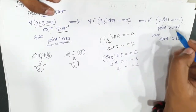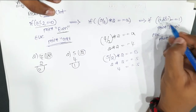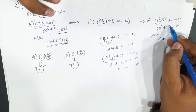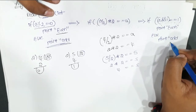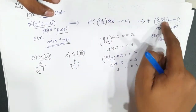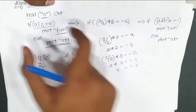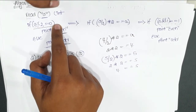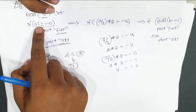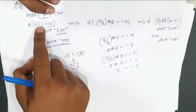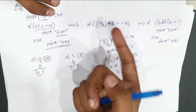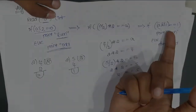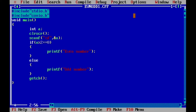Using bitwise operators, we can also determine whether a given number is even or odd. I have shown you three different conditions — the code is the same but only the condition changes. If they say to use the modulus operator, use the first condition. If they say not to use modulus, use the second or third condition.